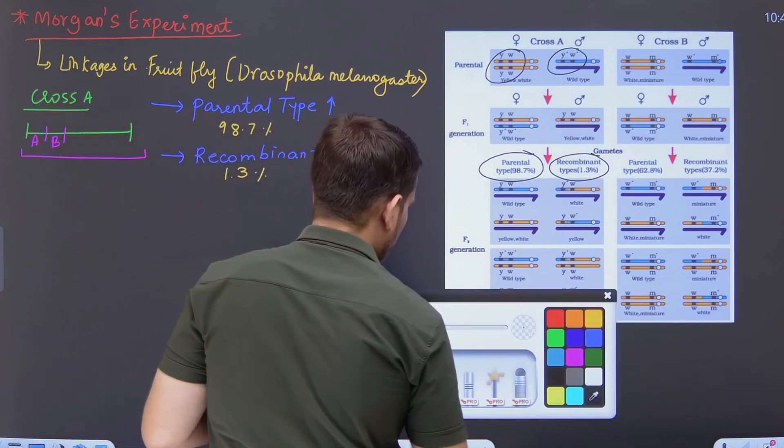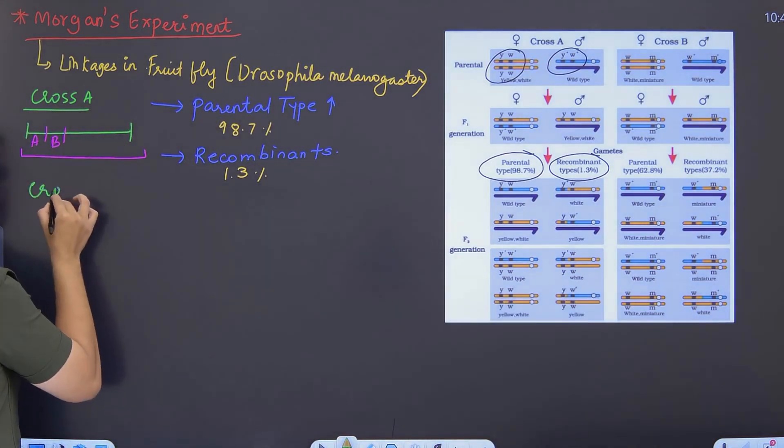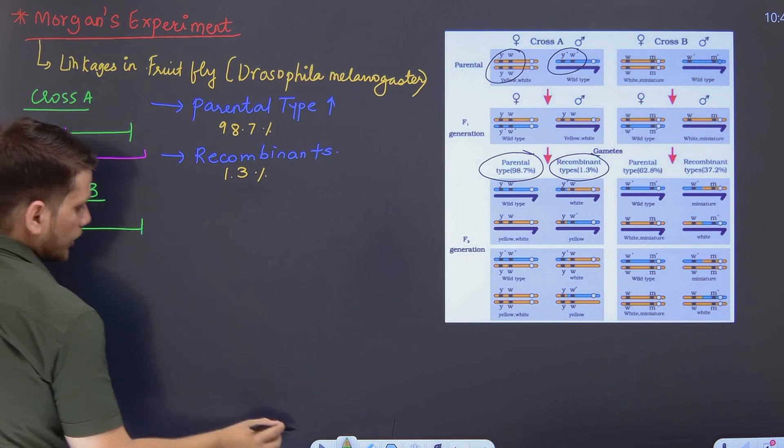Similarly, he took another cross which was cross B. So he took cross B. In cross B what happened? Just look at it.